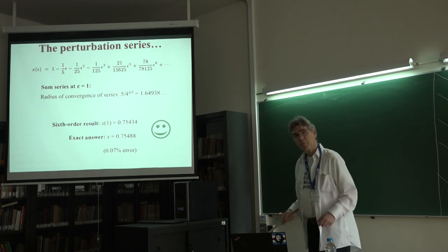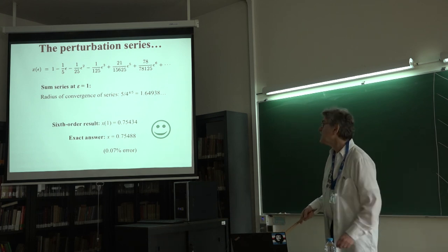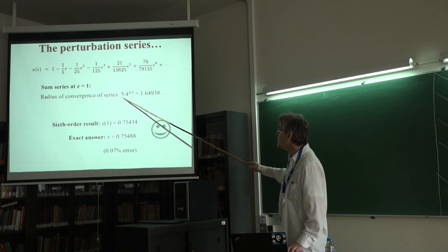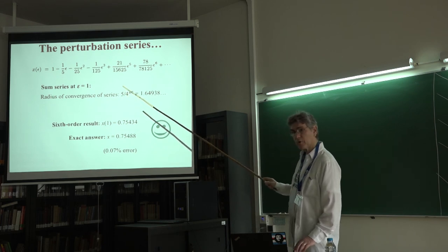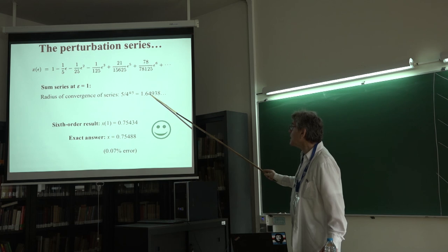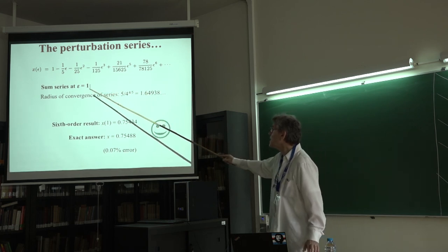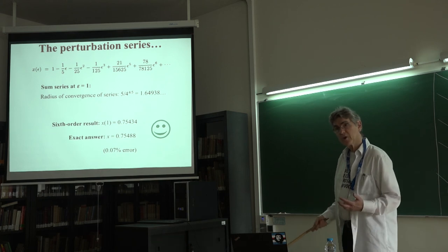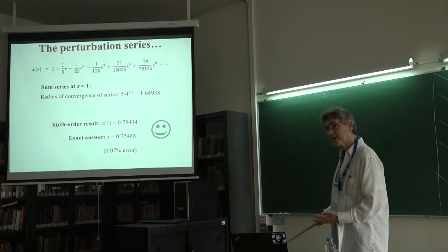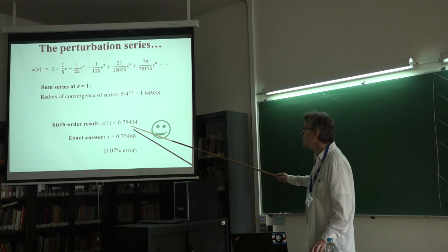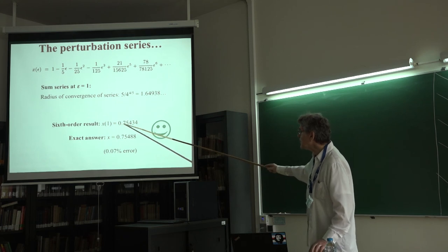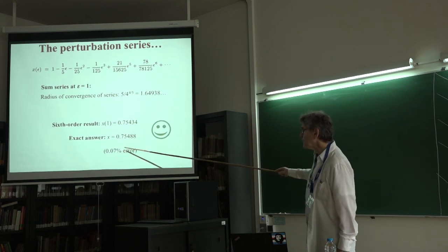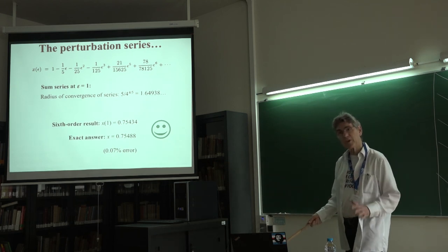The radius of convergence of the series is exactly 5 over 4 to the 4/5, which is bigger than 1. So when you plug in epsilon equals 1 to obtain the answer, you expect to get a good result — and you do. This is the sixth order result; this is the exact answer, and the error is 0.07%. That's really very good.